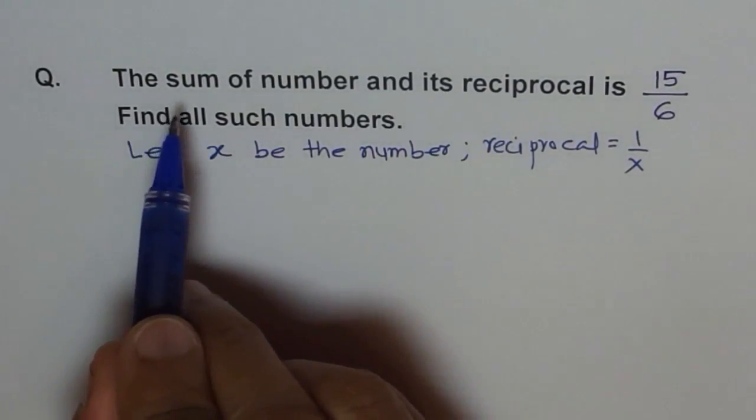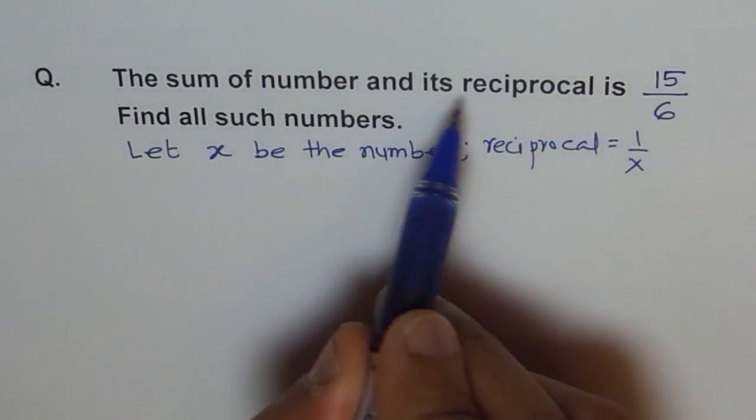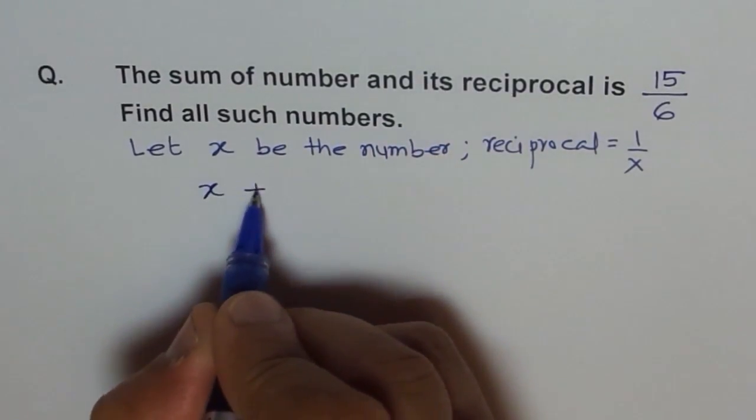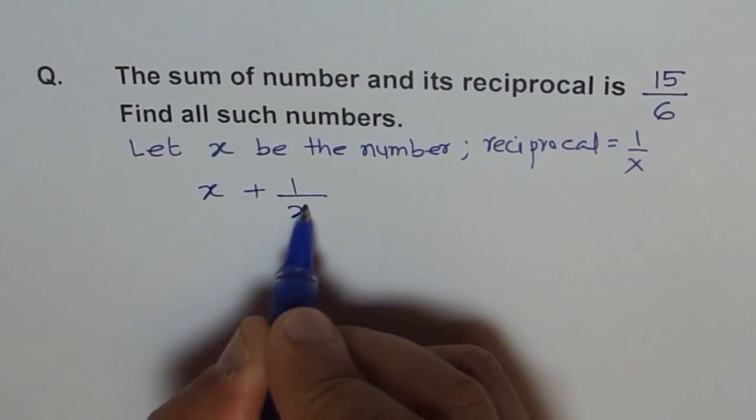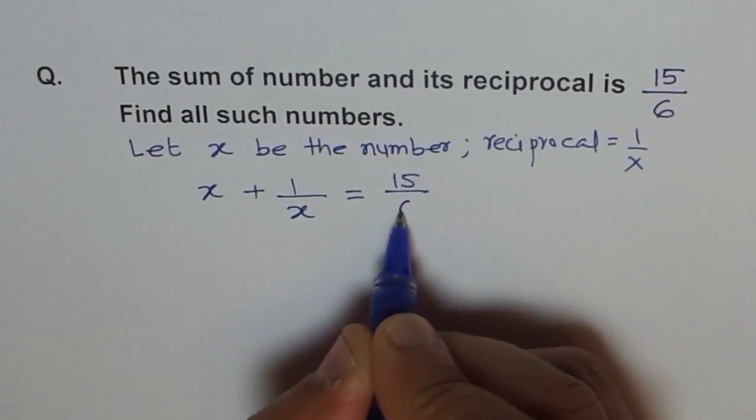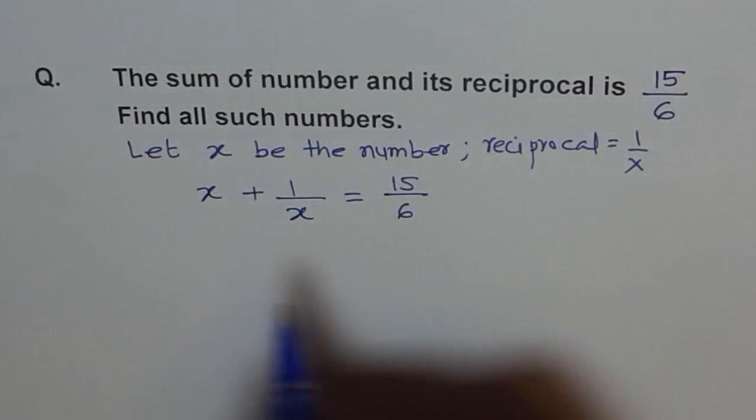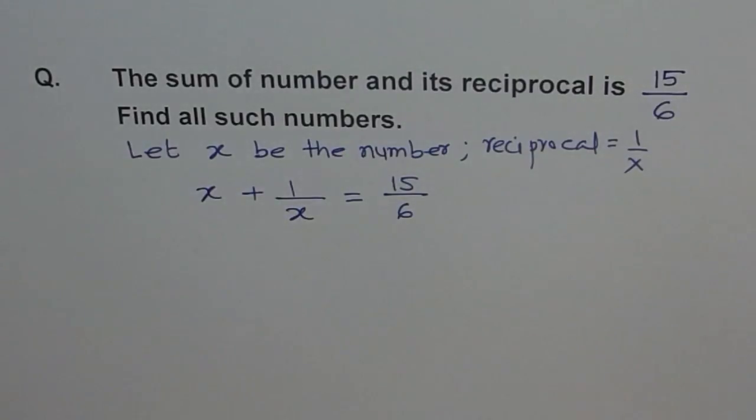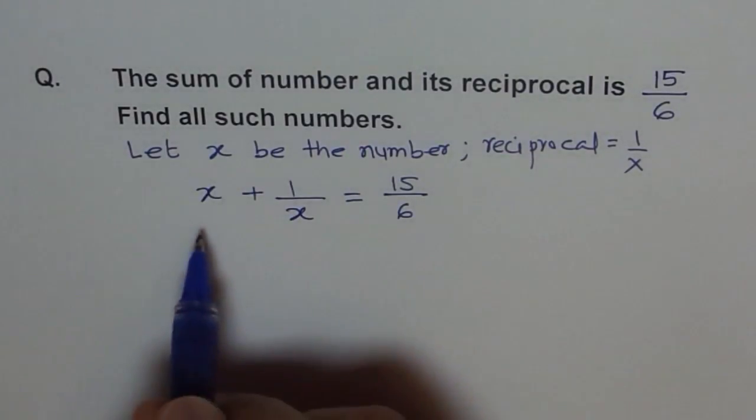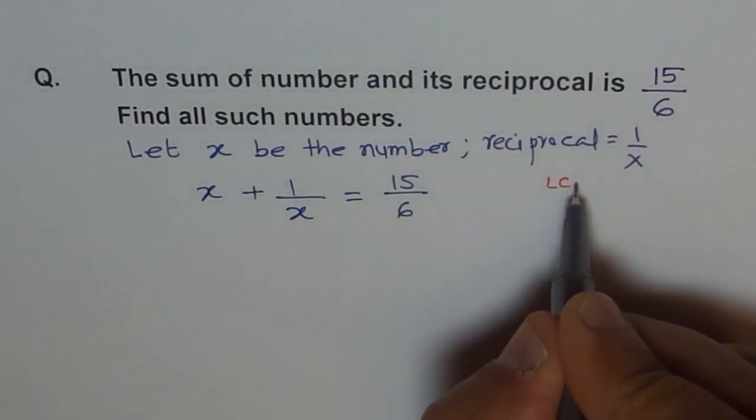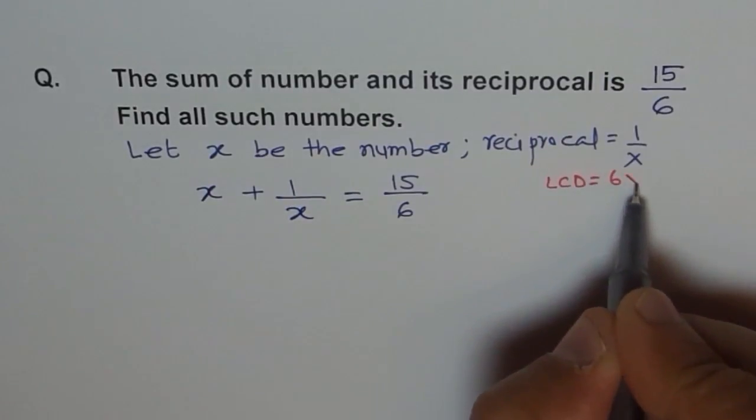Now the condition is sum of number and its reciprocal. So we say x plus 1 over x equals 15 over 6. That's the first equation. Since we have only one variable, one equation is enough. What is the lowest common denominator? 6x.